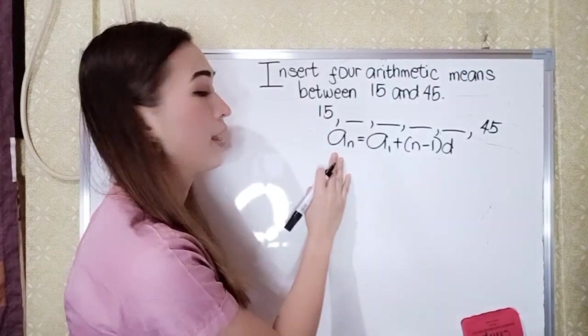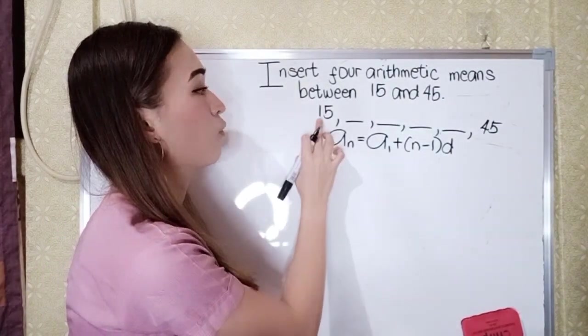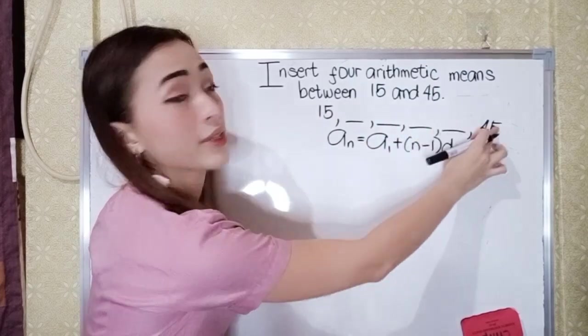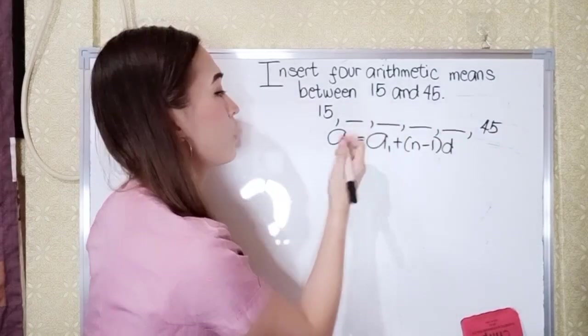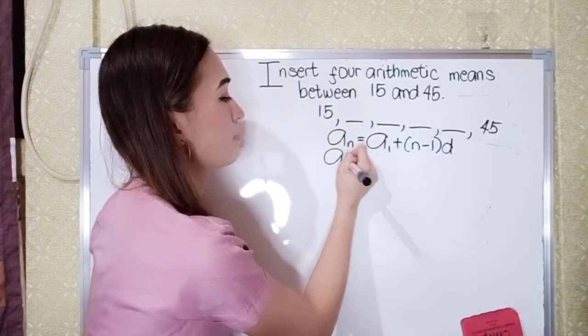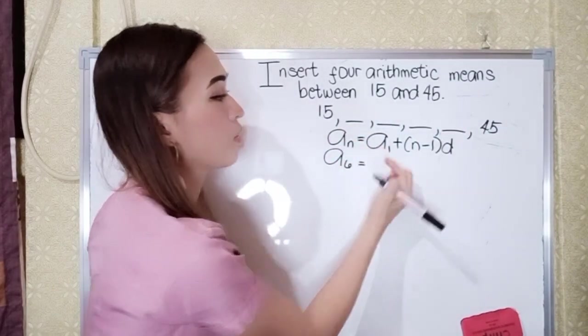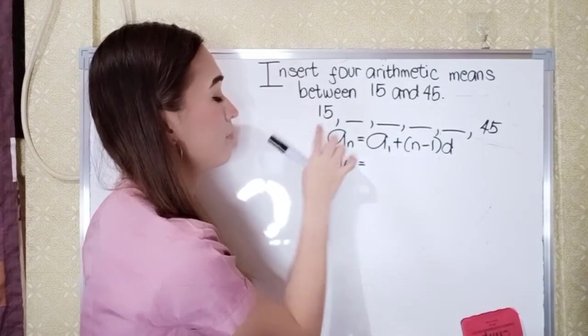So our n here, A sub n, let's count: 1, 2, 3, 4, 5, 6. So we have 6 terms here: 1, 2, 3, 4, 5, 6. So this is A sub 6 equals, so our A sub 1 is given by 15.